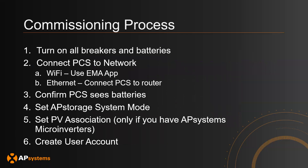This is the overall process of the commissioning procedure. First, you'll need to turn on all the breakers and batteries. Then, connect the PCS to the network, either via Wi-Fi or Ethernet. Next, confirm that the PCS can see the batteries connected to it. Then, set the AP storage system mode. If you have AP Systems microinverters, set the PV association so you have one app managing both PV and storage. And finally, create a user account for the end user to log in and see data.